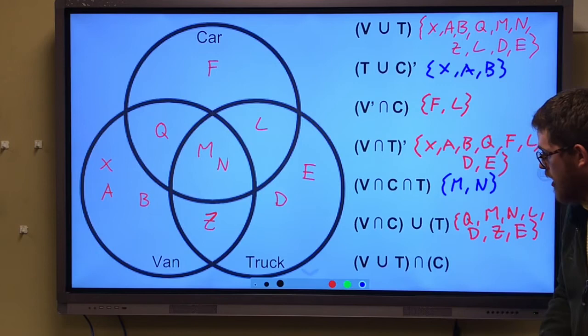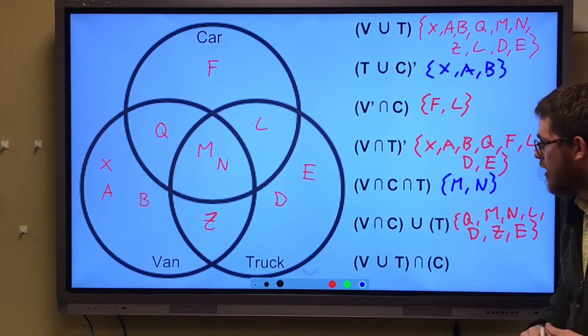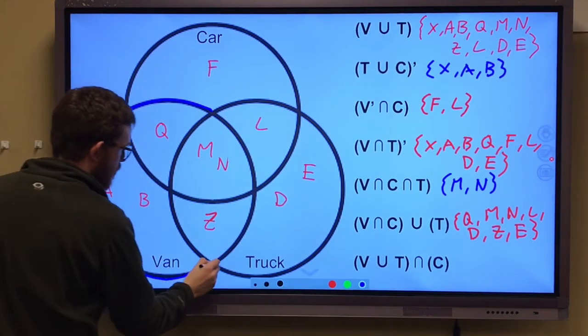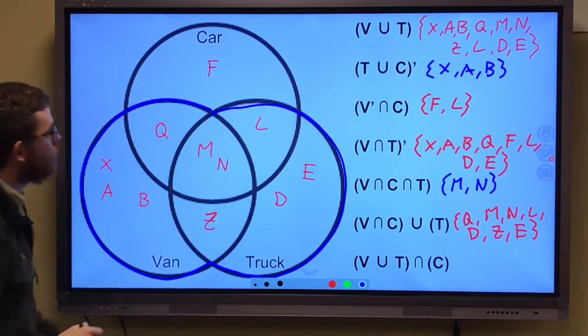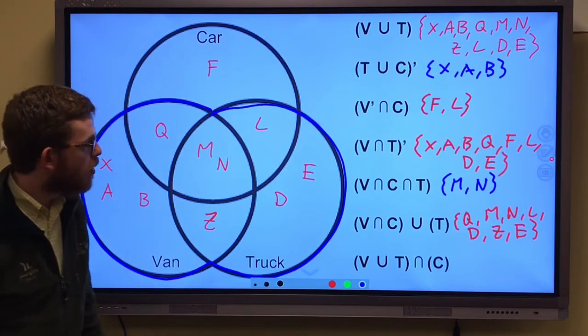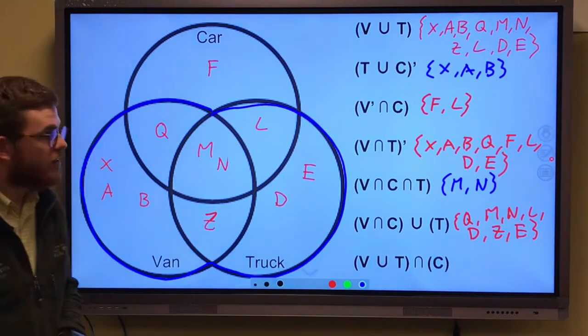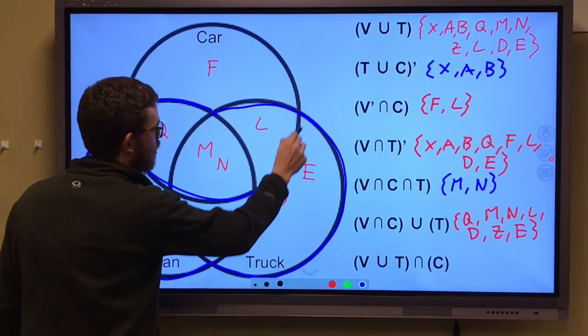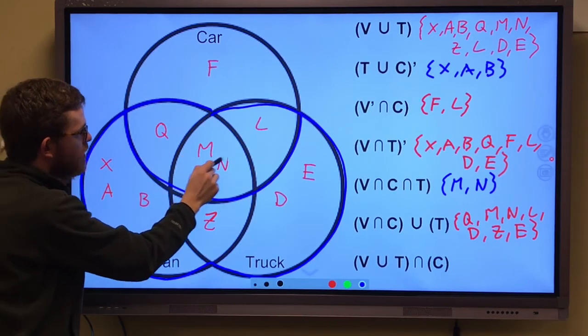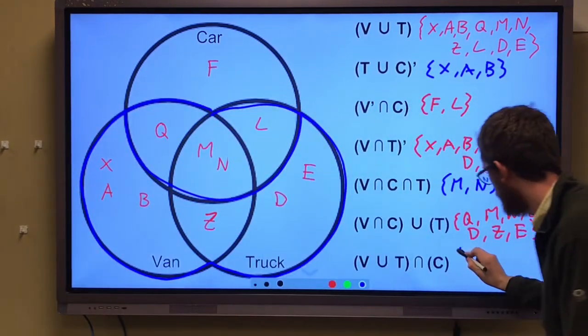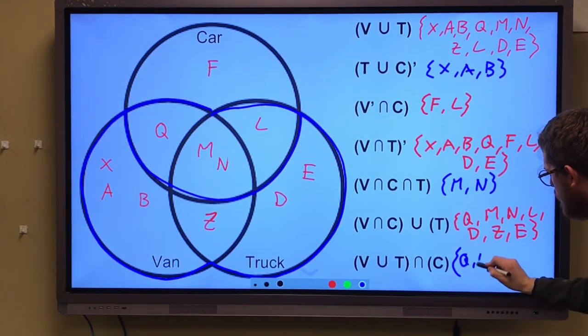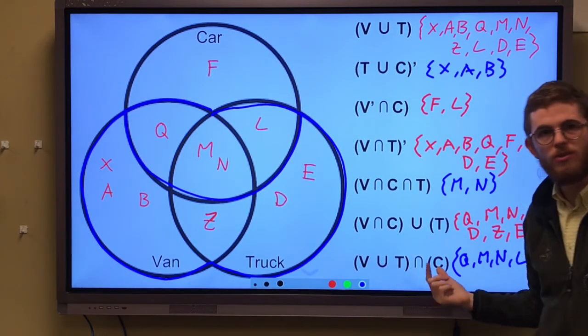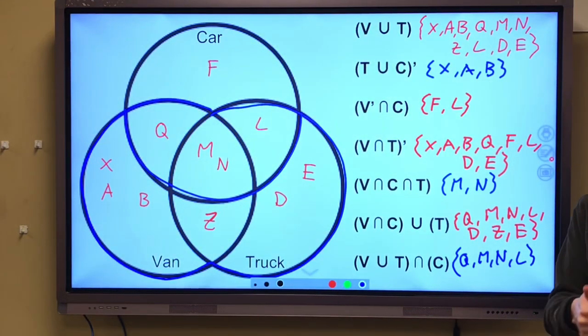Finally, the union of V and T. All of that together. Remember we started with this way at the beginning. Everything but Frank. But we are going to intersect that with C. Where does this cross over with the cars? It's that stuff right there. It's Quentin, Monique, Naomi, and Leticia. Because that is where they intersect. These two things intersect.